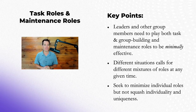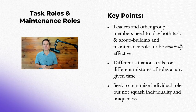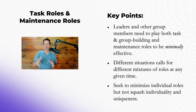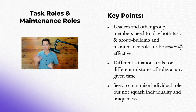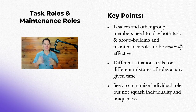Here are the key takeaways. Leaders and other group members need to play both task and relationship maintenance roles to be minimally effective — being all task or all relationship definitely won't work. You need balance to set a foundation for possible success. Different situations call for a different mixture of roles depending on the circumstance: if there's tension, you might harmonize; if things are drifting, you might orient the group. Seek to minimize individual roles to avoid derailing things, but don't squash individuality — when people contribute in their own unique way, you get an excellent, fun, fruitful, and productive discussion.